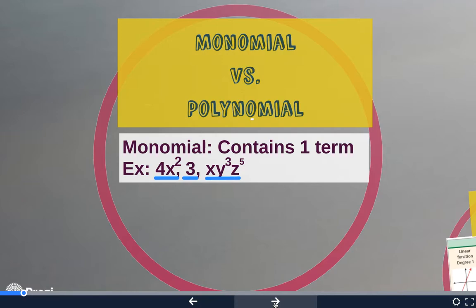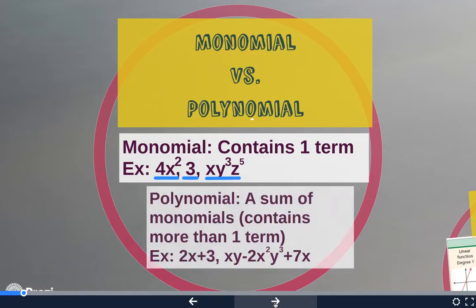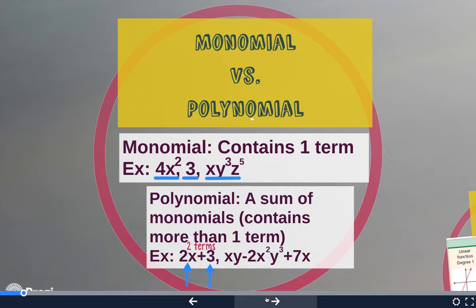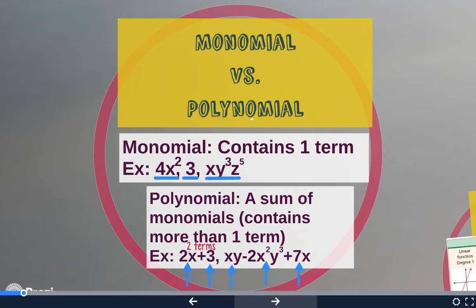Now you probably know what a polynomial is. Poly is a prefix that means more than one or many. A polynomial is when you have more than one term — it's a sum of monomials. If we look at this first one, 2x plus 3 — see how there's a plus sign right here? It is separating two separate monomials, the 2x and the 3. So this one has two terms and is no longer a monomial. The next one has a subtraction symbol and an addition symbol separating three separate monomials — xy, 2x squared y to the third, and 7x — which means it is a polynomial with three terms.